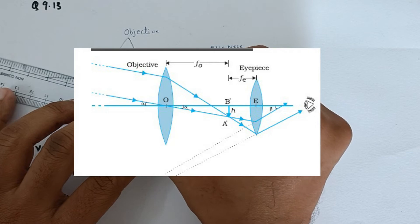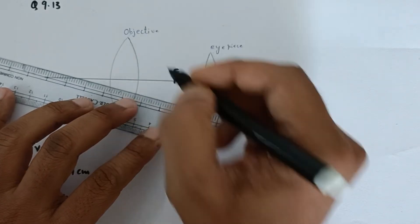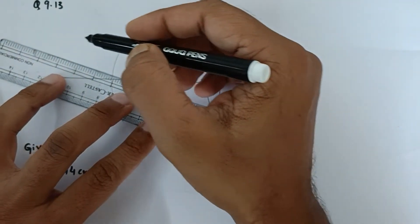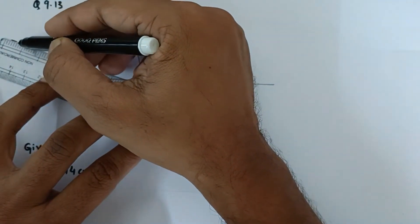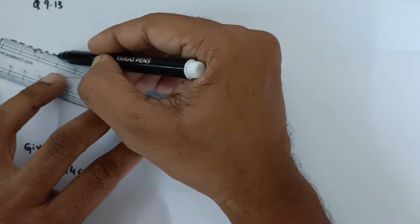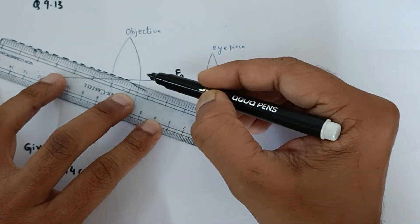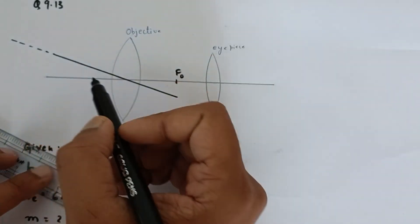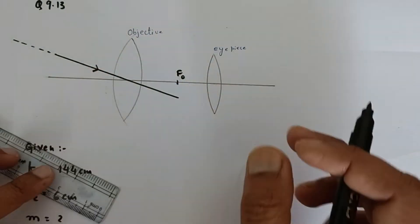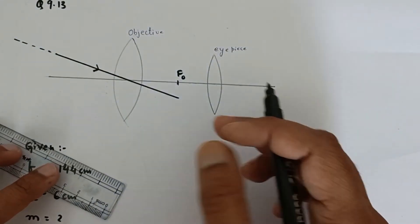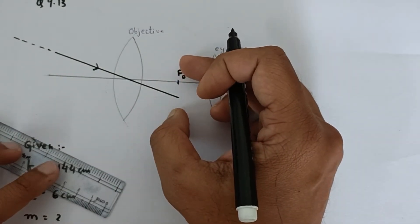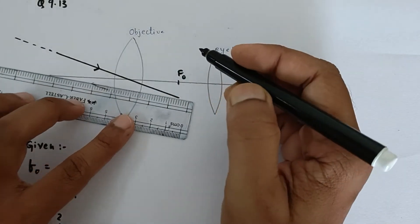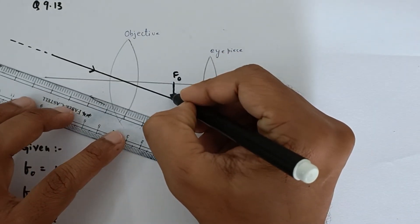Now this point is the focus of the objective lens. So when the rays are coming from infinity like this, because we are seeing the heavenly objects, and the rays coming from the heavenly objects are parallel to themselves, the image is formed at the focal plane. Let us assume a second ray, since the final image is formed over here.